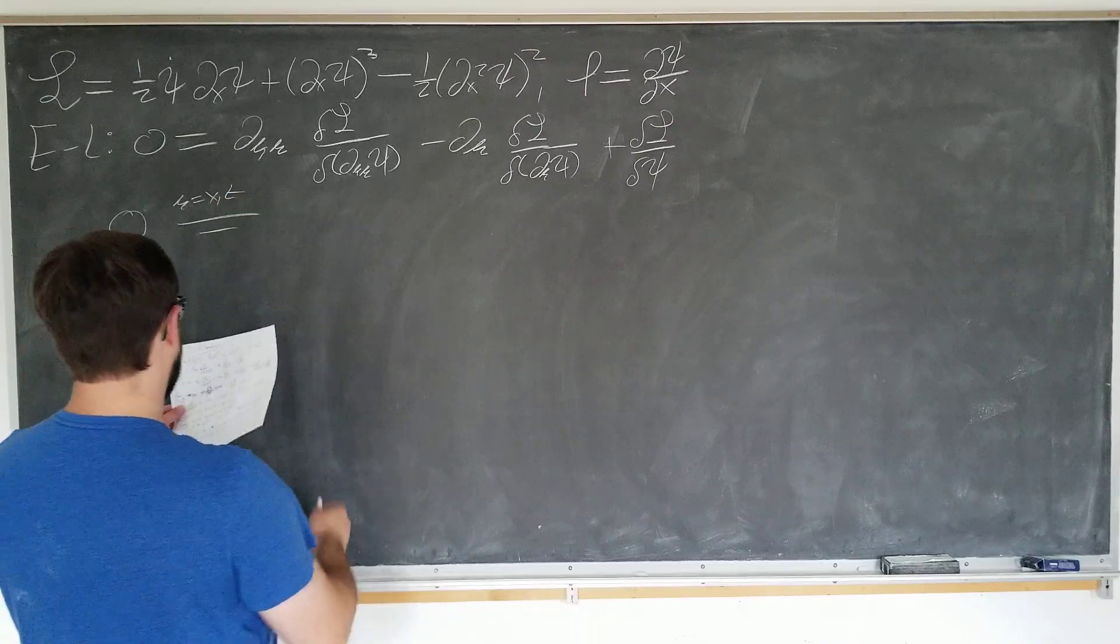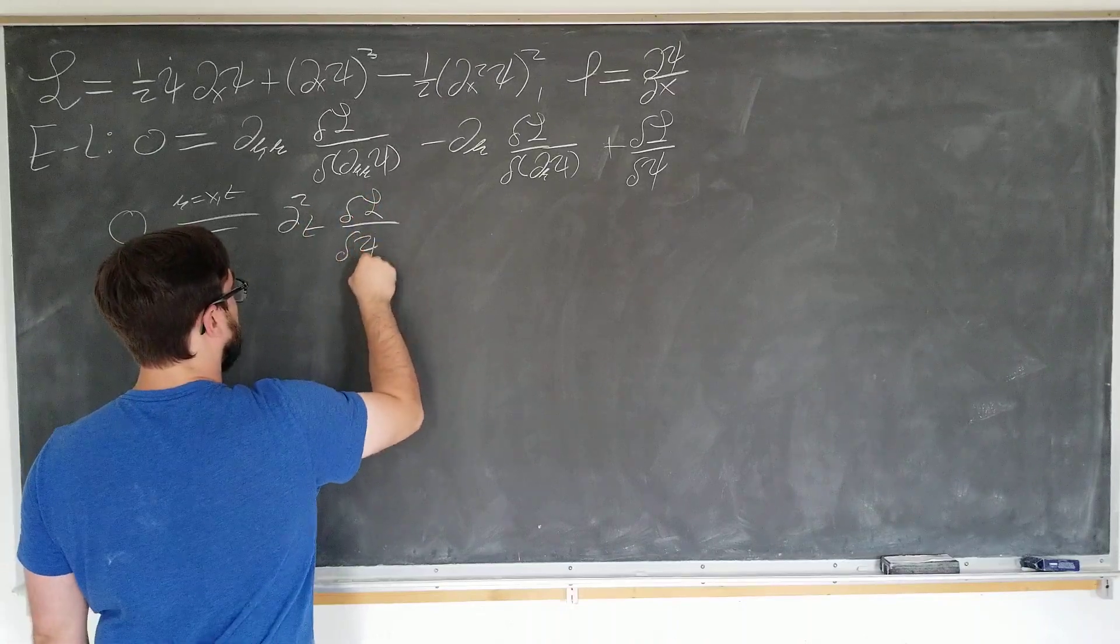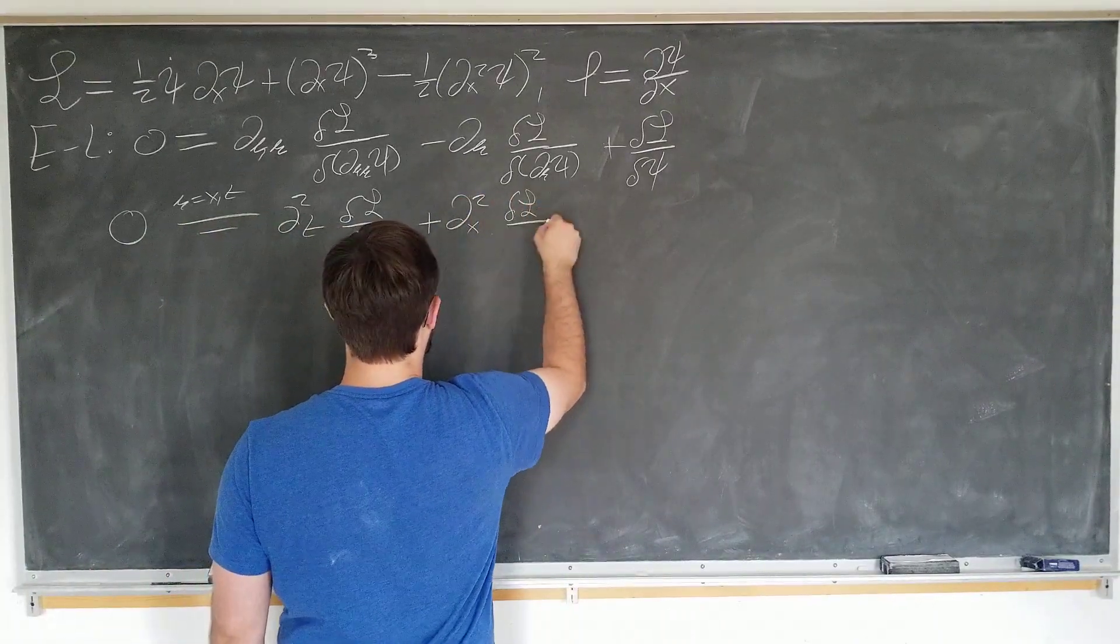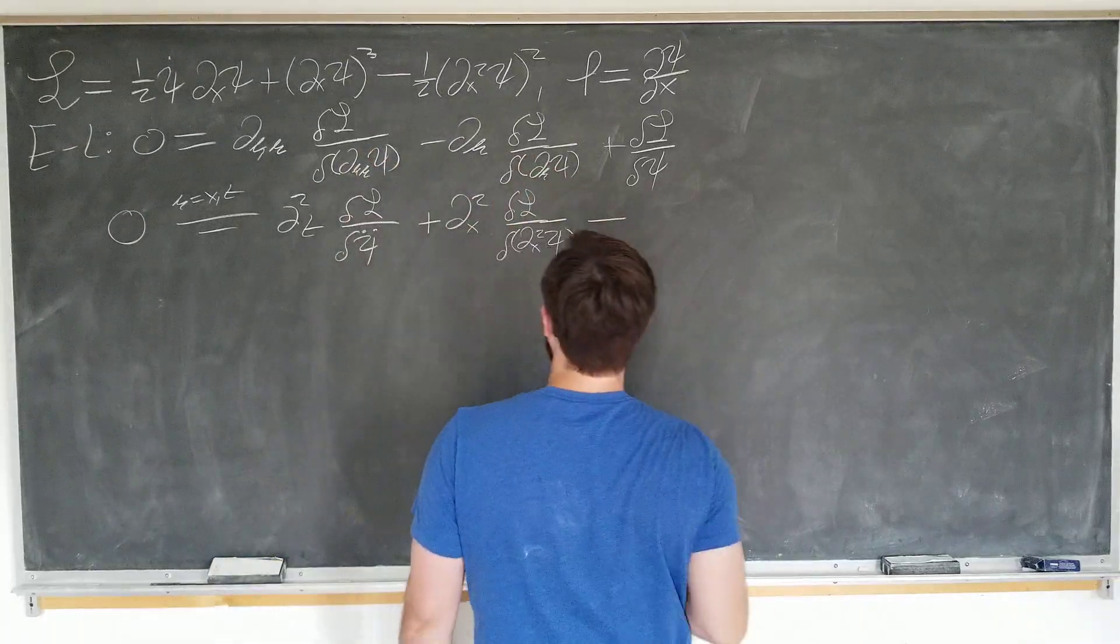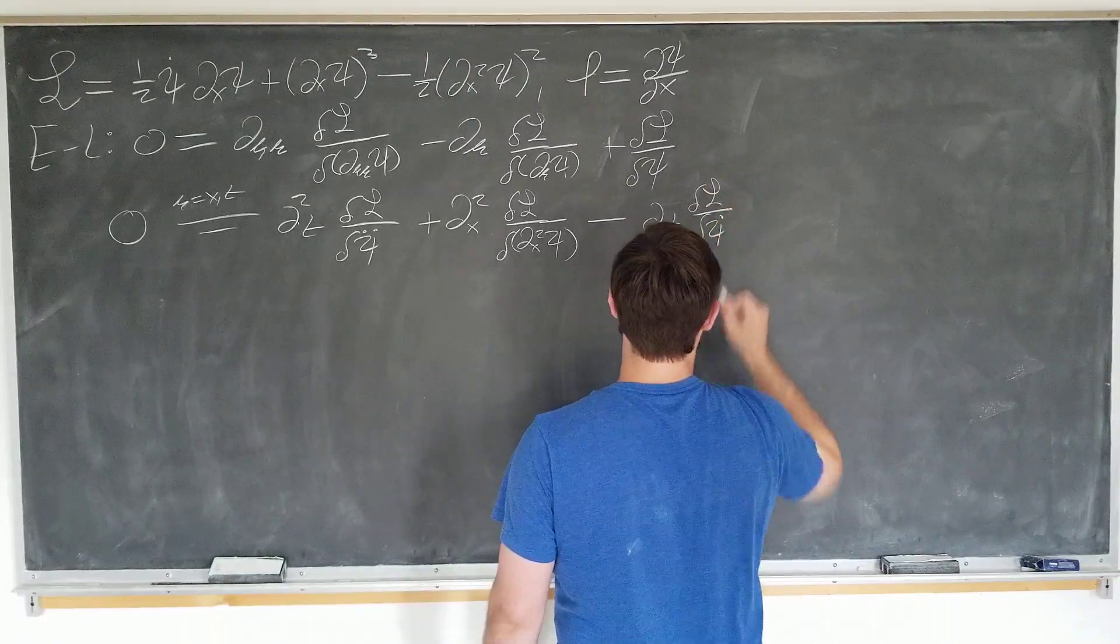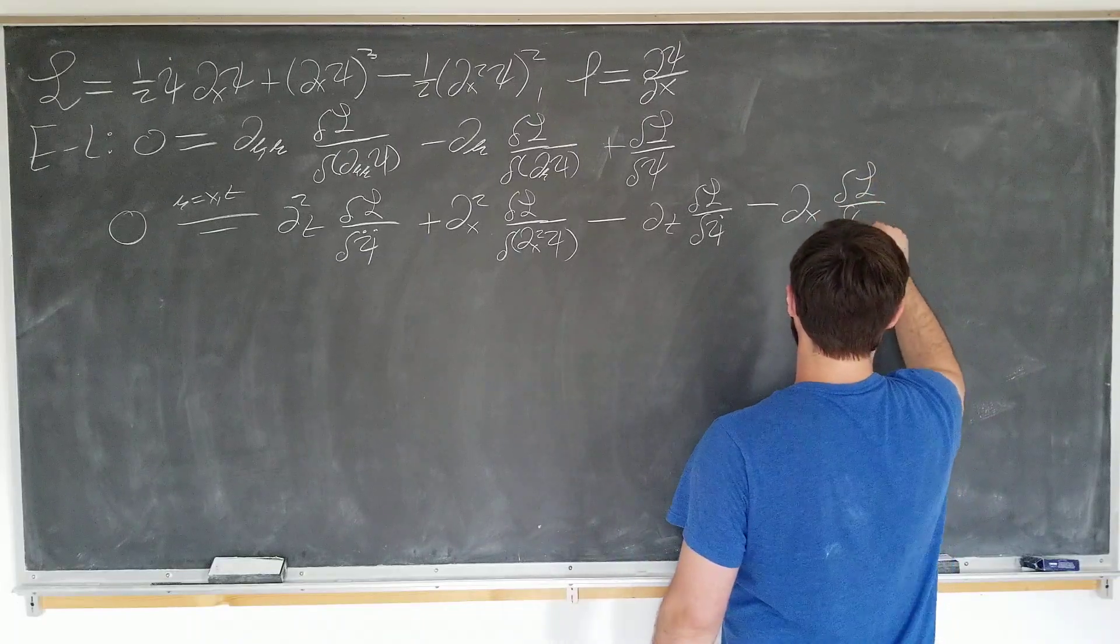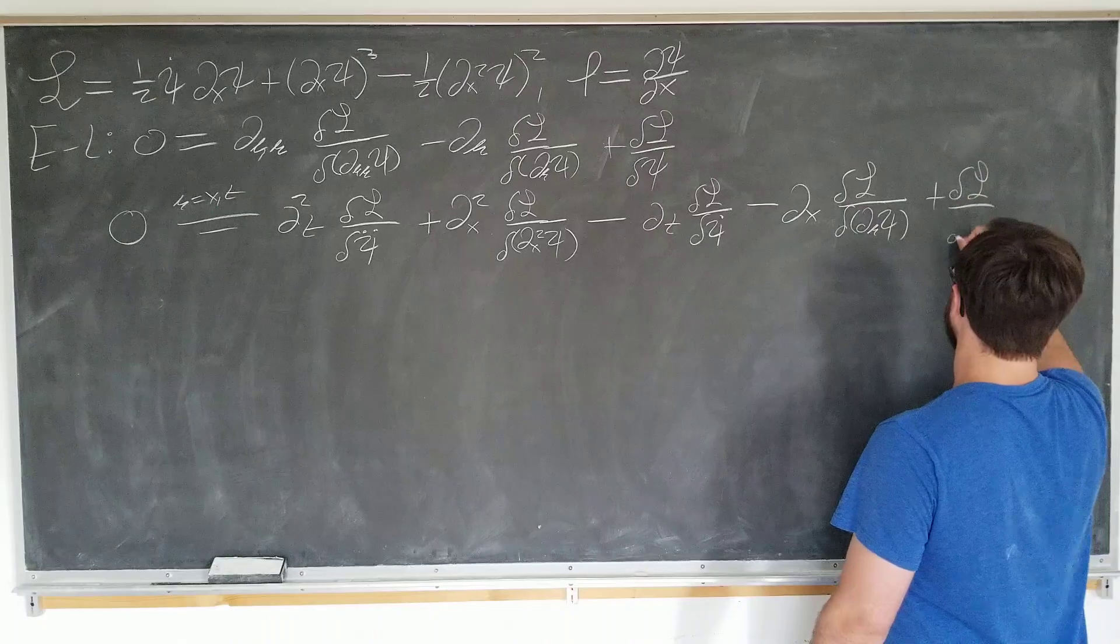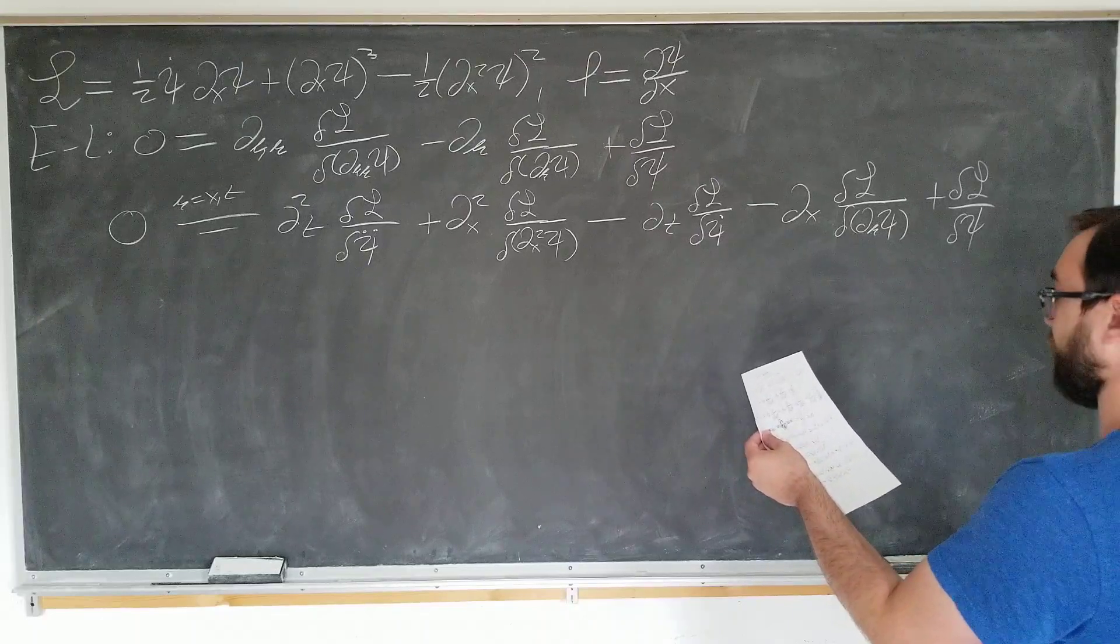It tells us that 0 is equal to d t squared variational of L with respect to phi double dot plus dx squared variational L with respect to dx squared psi. Okay. And that's that term. This term contains minus time derivative delta L by delta phi dot and variational of L with respect to d mu phi plus delta L by delta phi. Okay. Did I get this right? As far as I can tell, yeah.